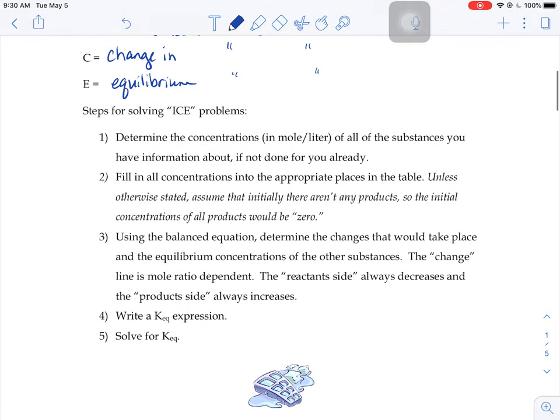So to do an ICE problem, you're going to do a couple of steps here. Your first thing that you're going to do is figure out the concentrations in moles per liter of all the substances you have information about. You're going to fill those concentrations into this ICE table that you'll see.